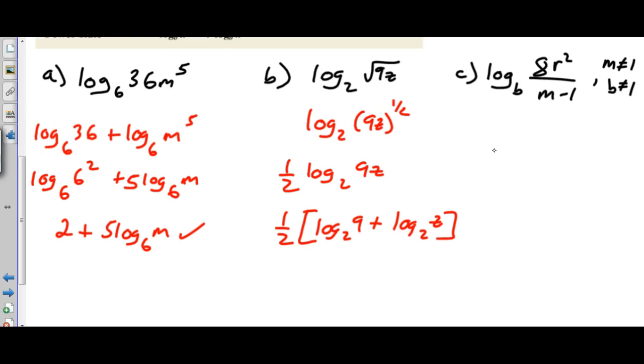Now for part C, I first see that I have a quotient so I'm going to write that as two logarithms. I'm going to write log base B of 8R squared and I can do minus log base B of M minus 1. I'm just going to put that in parentheses so we know what's going on.